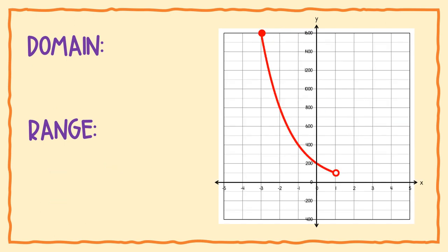But what if the function doesn't have arrows and has endpoints instead? In that case you can't say all real numbers for domain. For domain we look at the x axis left to right — the left endpoint hits at negative 3 and the right endpoint hits at positive 1, so we write negative 3 is less than x is less than positive 1. But we're not done — one endpoint is colored in solid, the other is open.